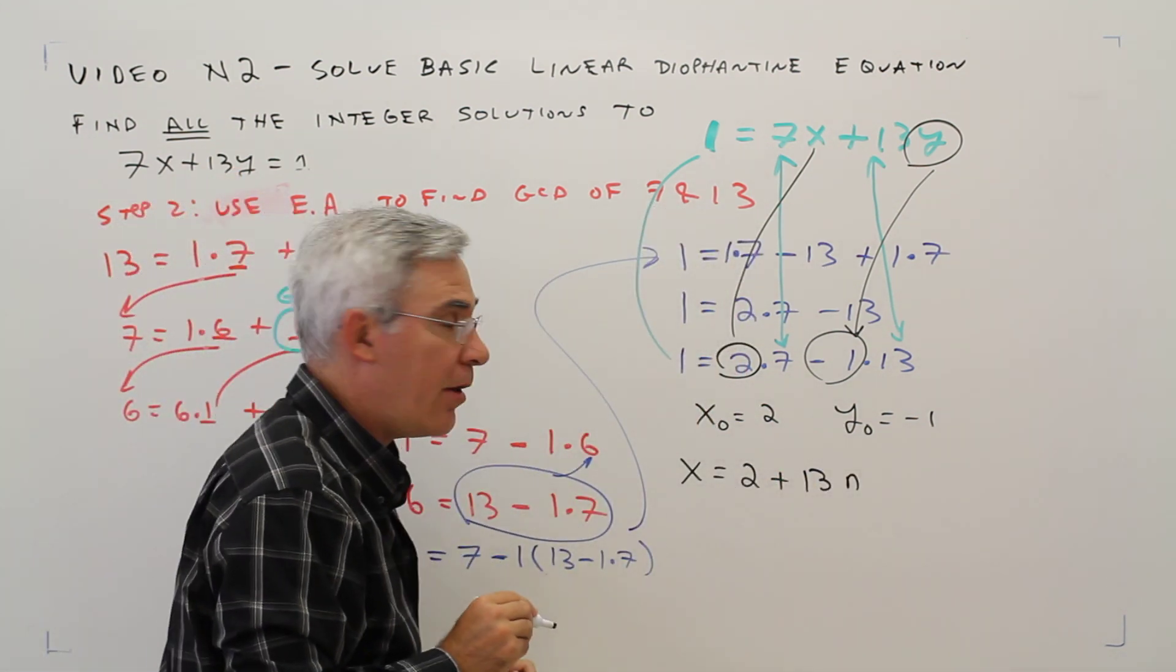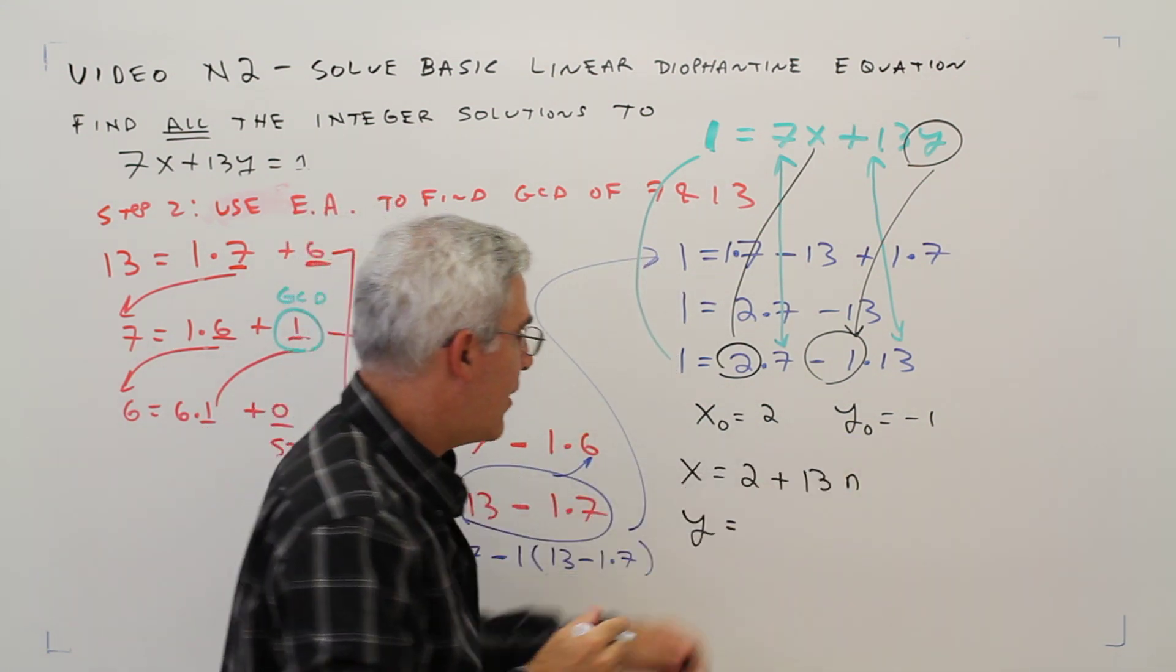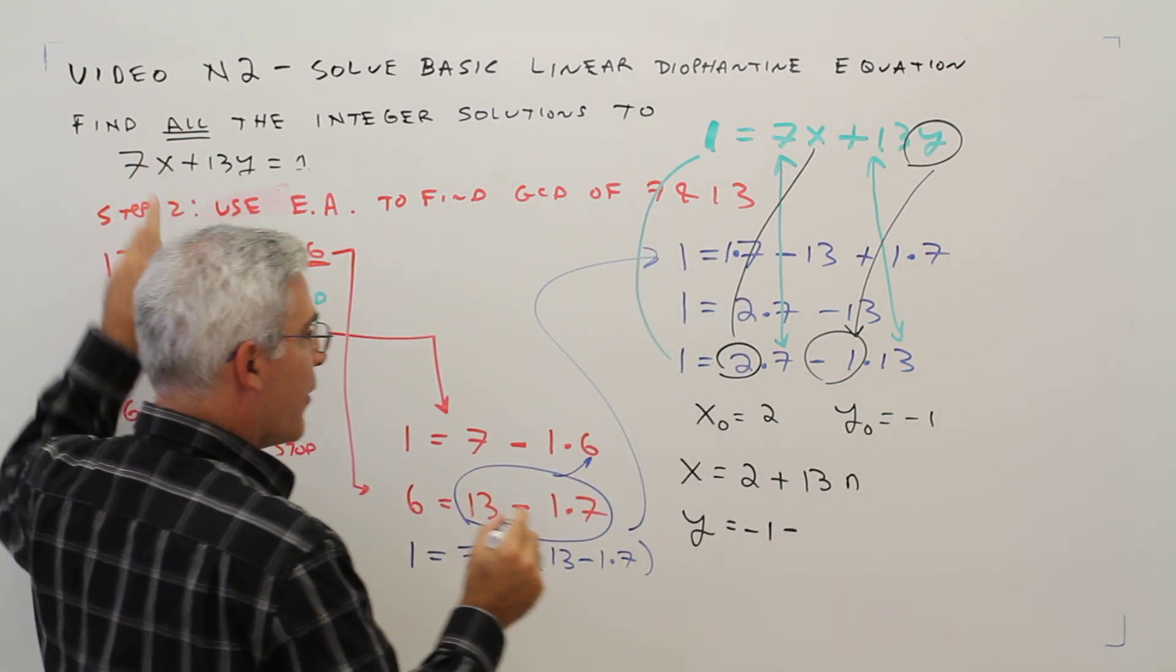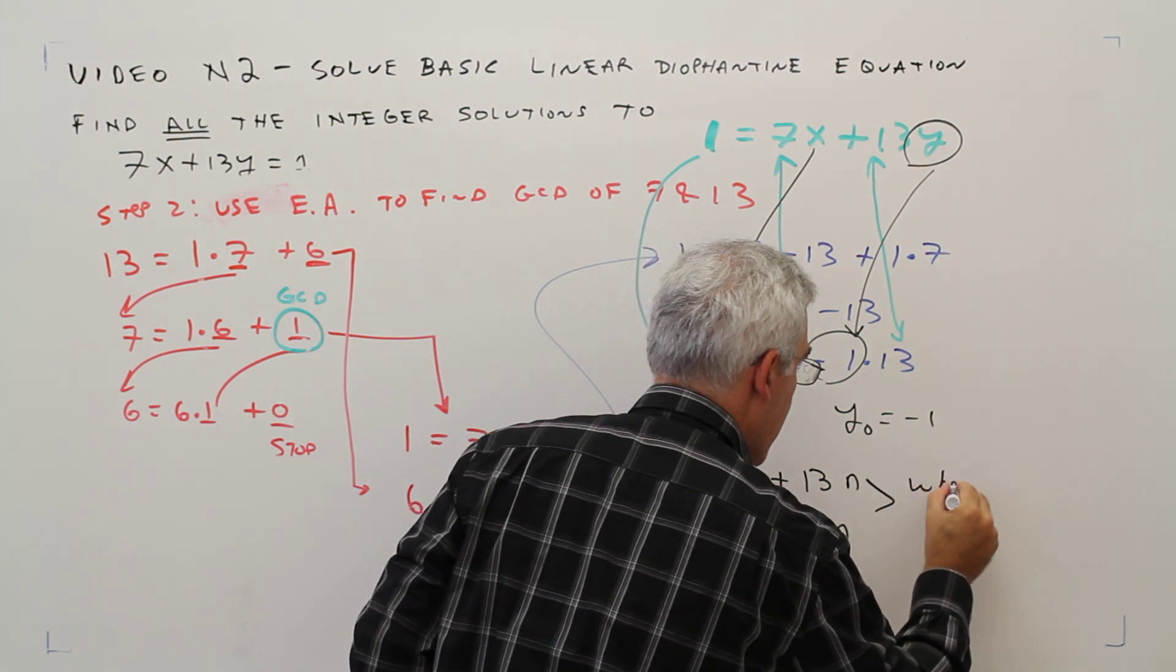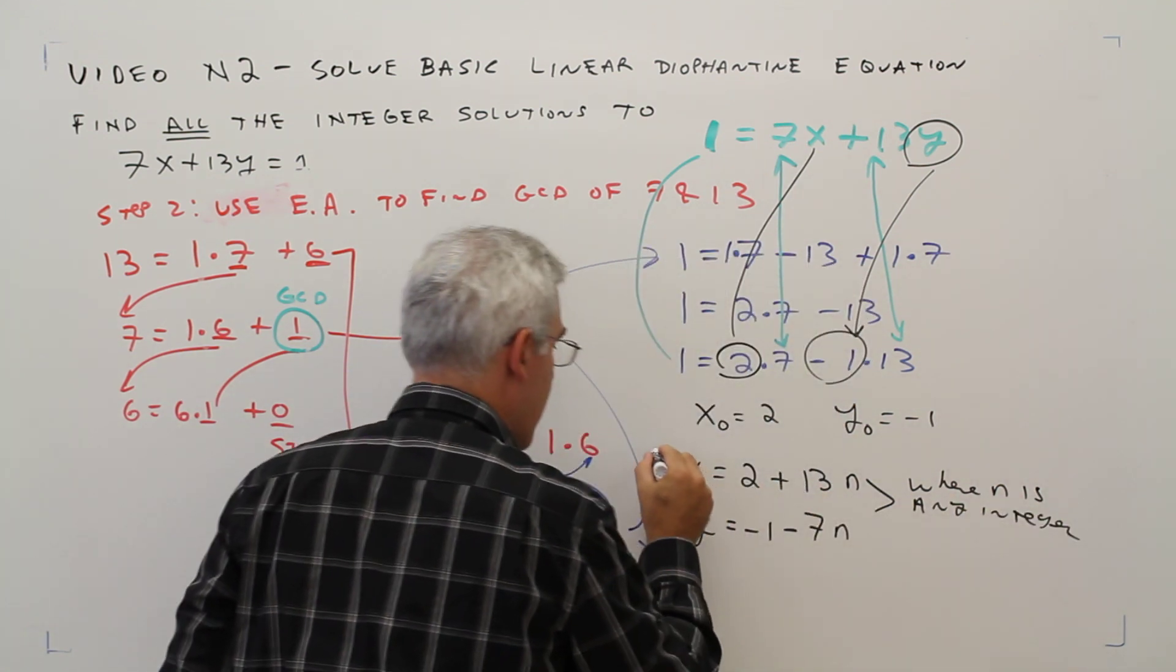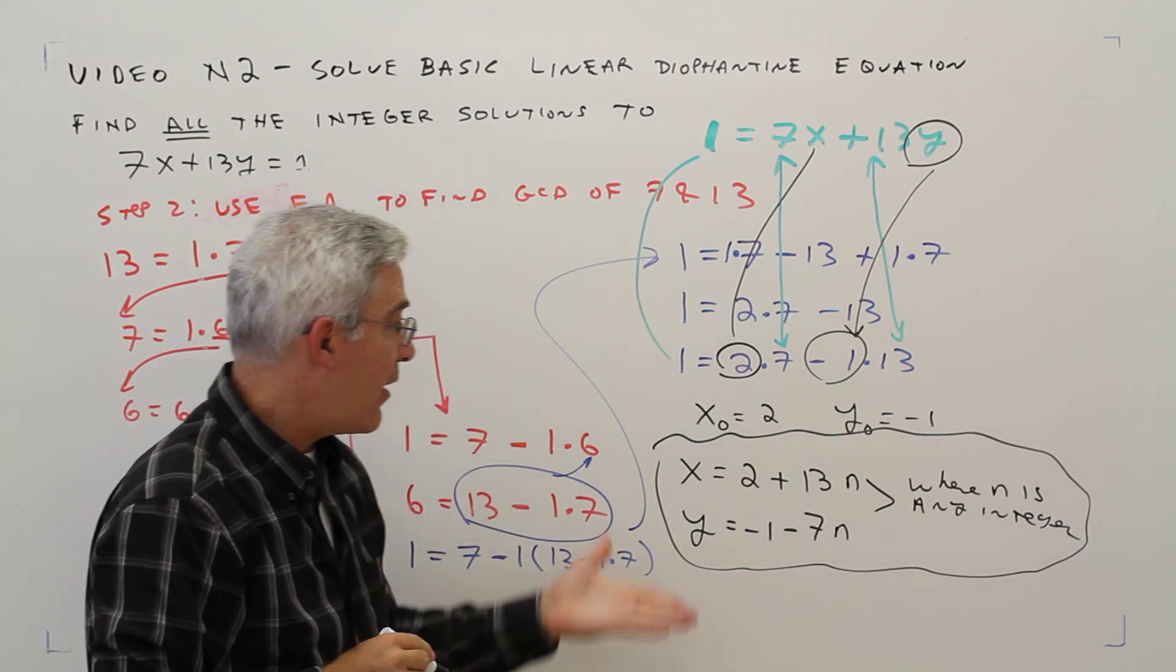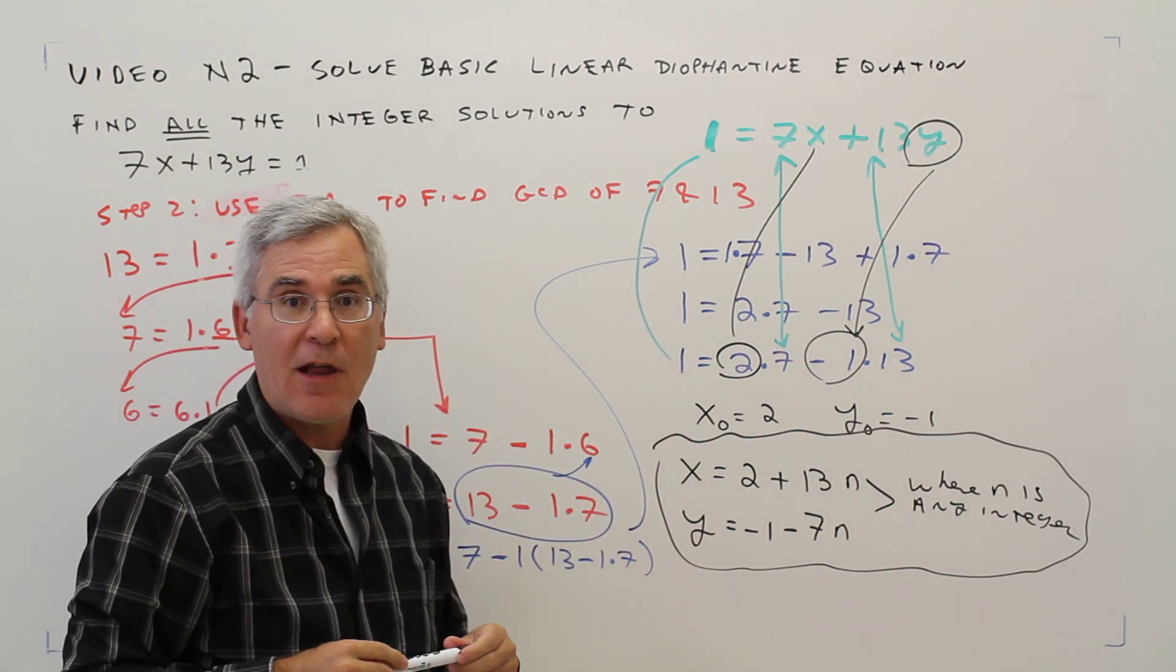And y equals y naught negative 1 minus the other coefficient, if you will, where n is any integer. And that is the general solution to this linear Diophantine equation.